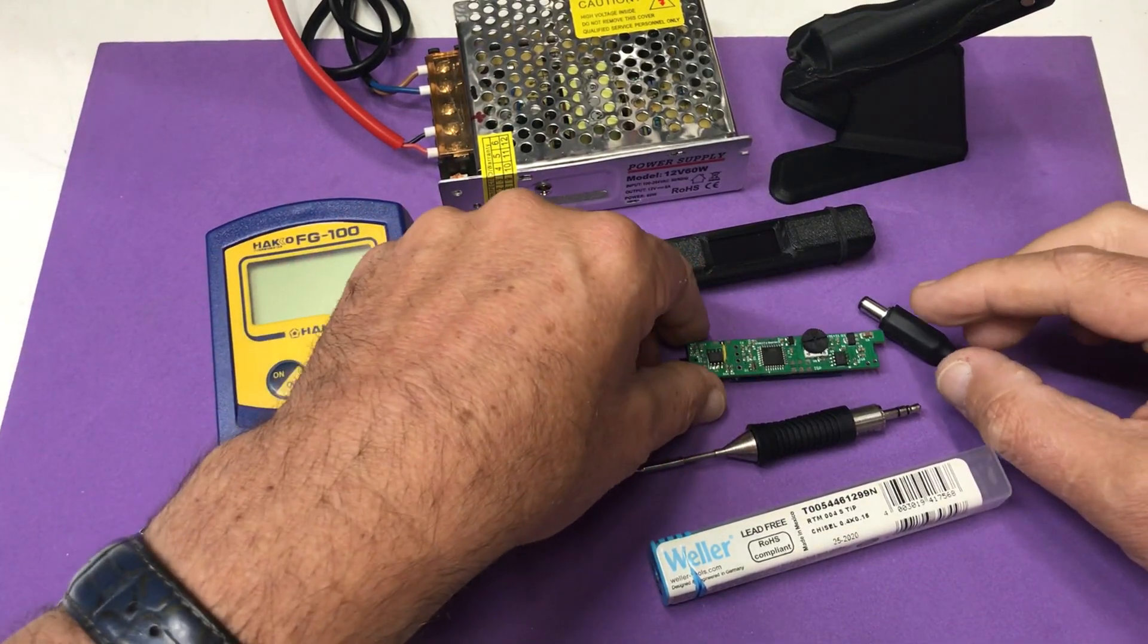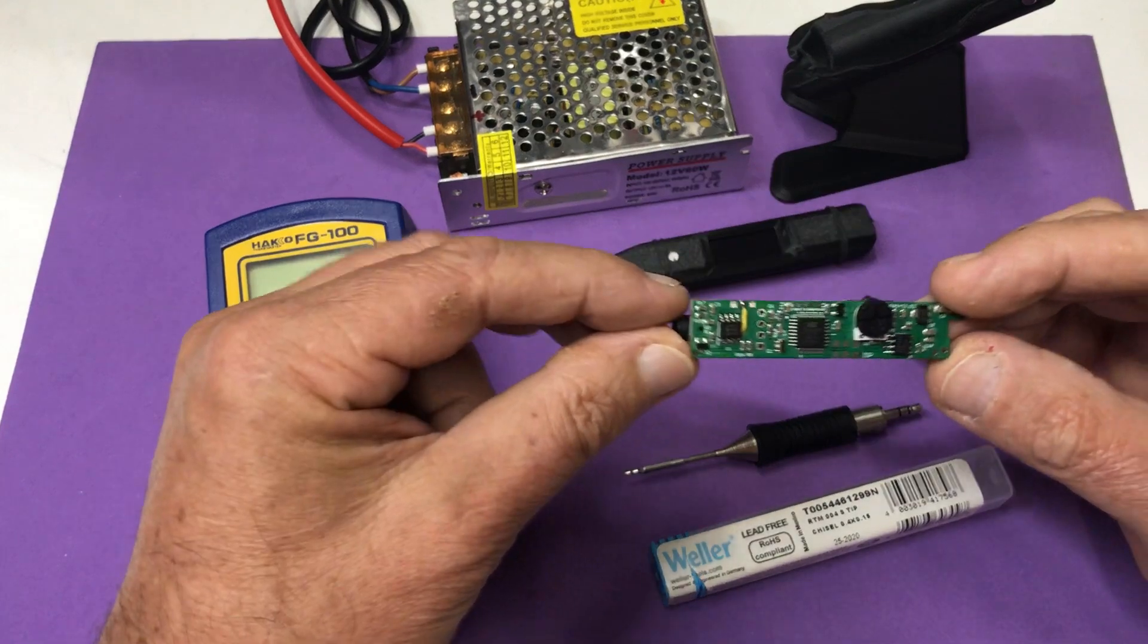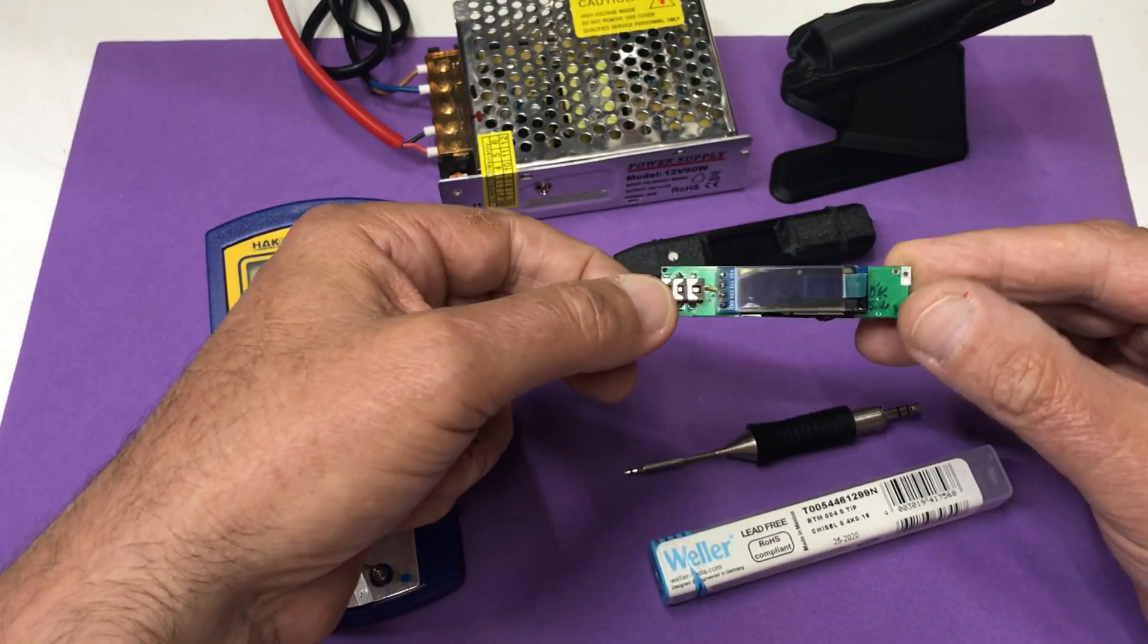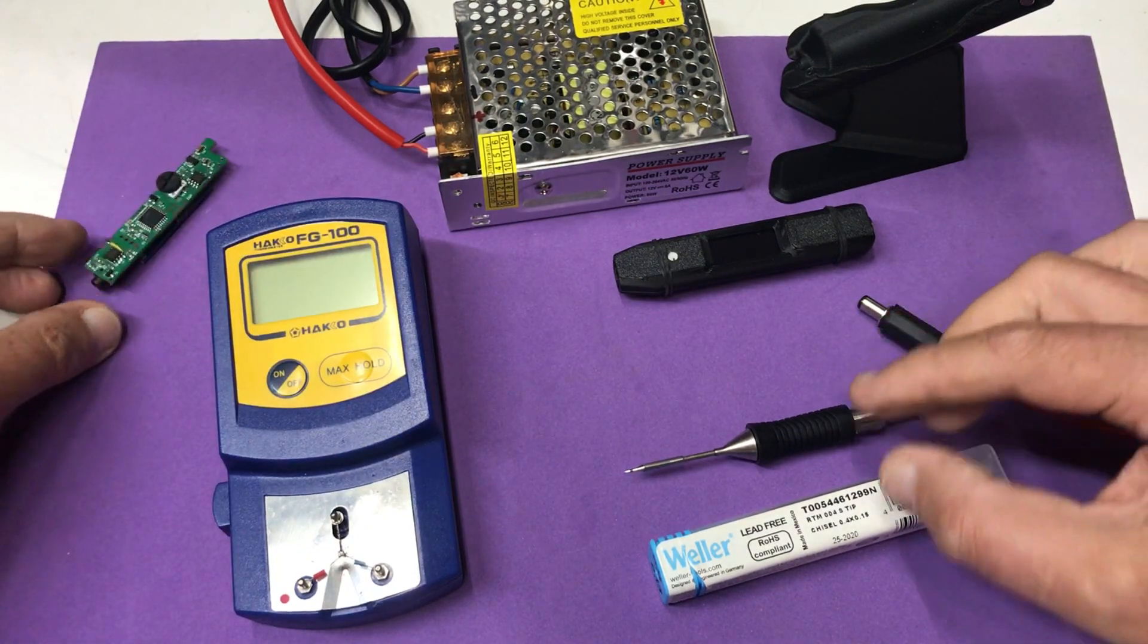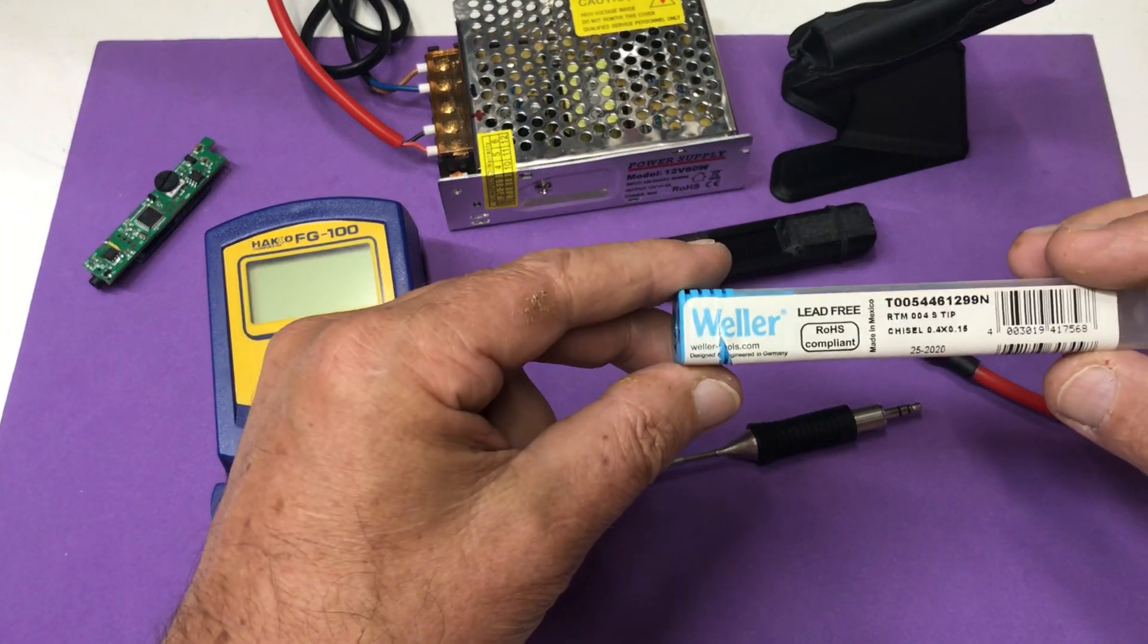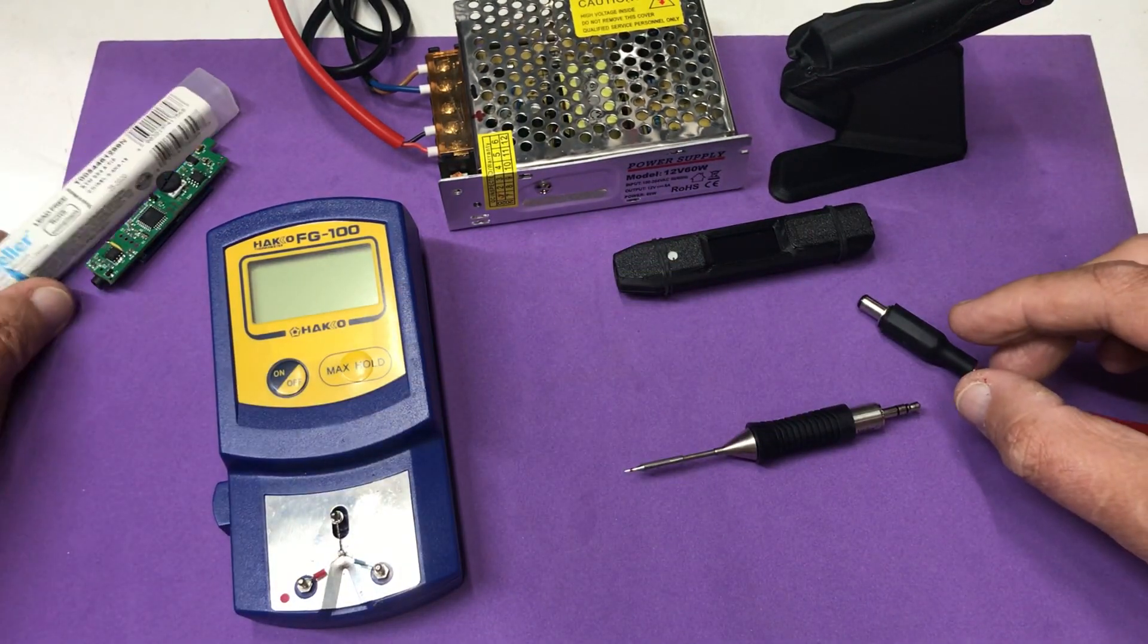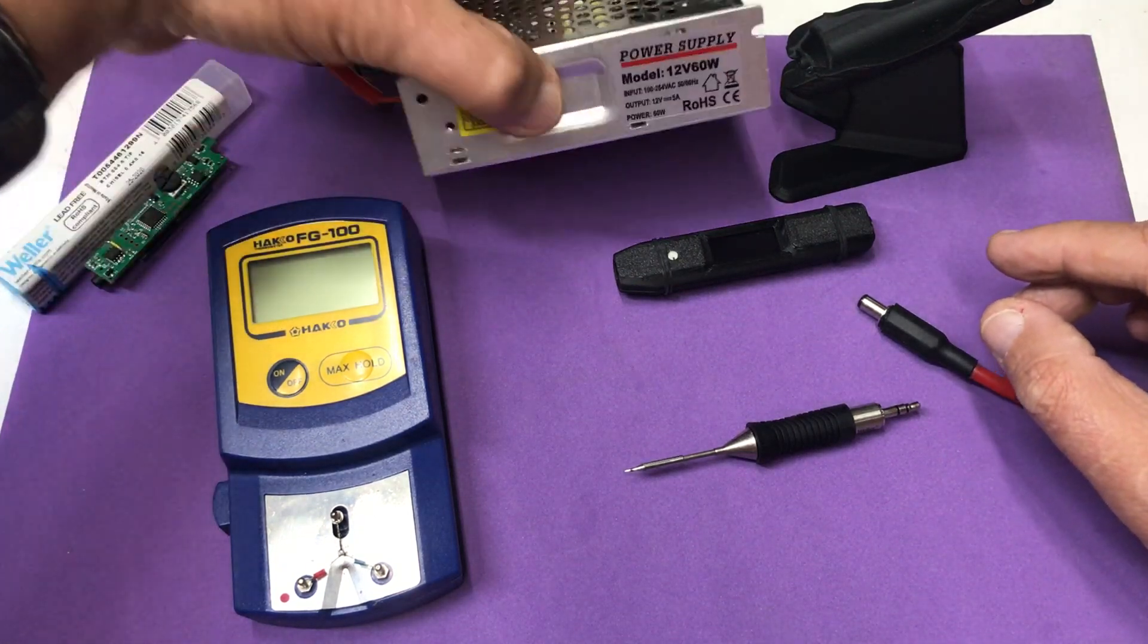So this is my new Weller controller. This is the PC board with the display, Weller tip, and this is the power supply.